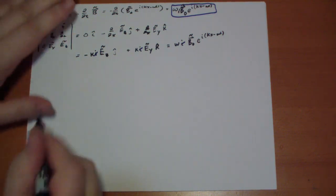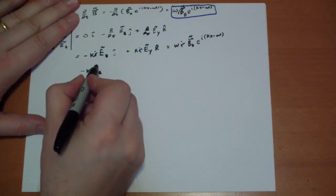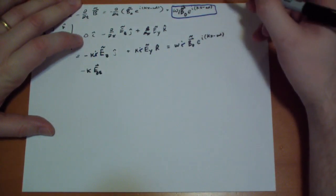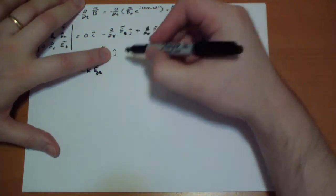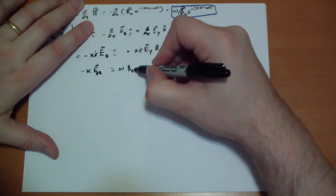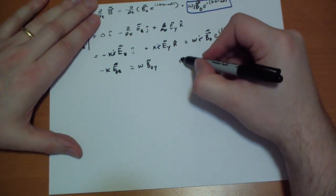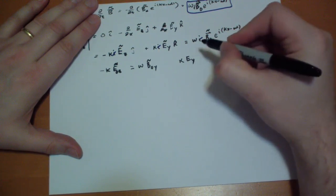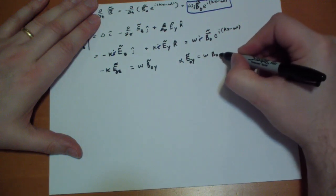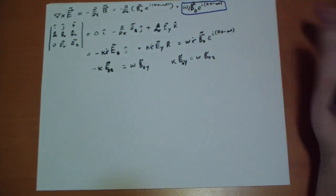We have two components. We have minus kappa E-naught Z in the j component is equal to omega B-naught in the j direction, that's the Y direction. These are complex, not vectors. And on the other hand, we have kappa E-naught in the Y direction has to equal omega B-naught in the Z direction. Because this is the k component that has to equal the B field there. So we have these two rules.